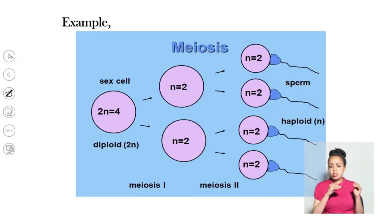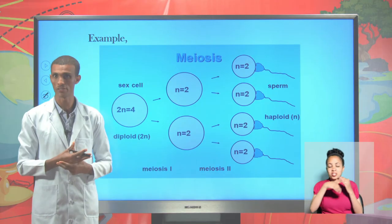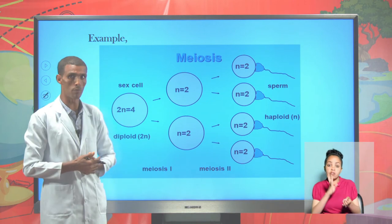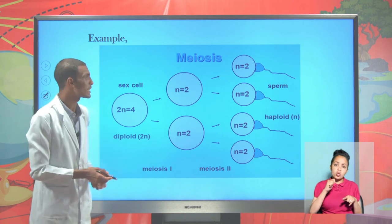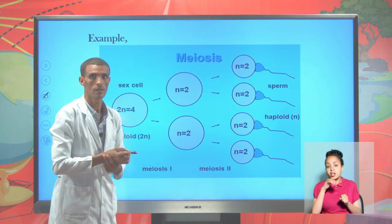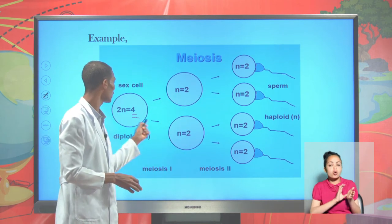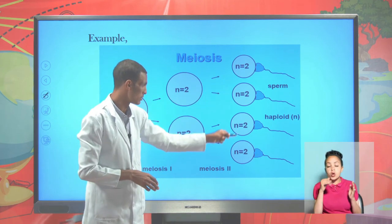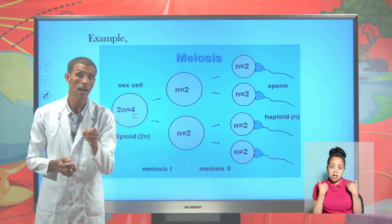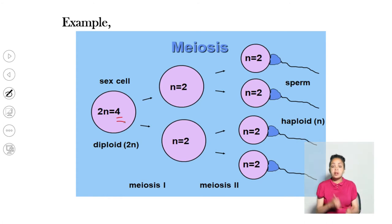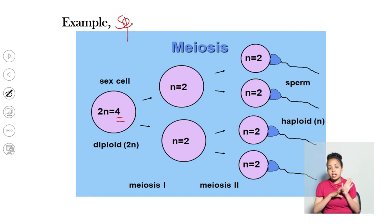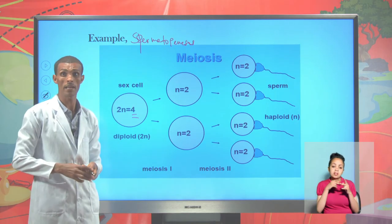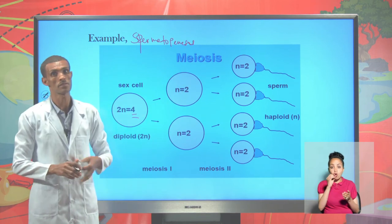When we speak about meiosis, it involves spermatogenesis and oogenesis. If a cell with four chromosomes is divided meiotically, the result is four daughter cells, where each daughter cell has half the number of parental chromosomes — two. At the end of meiosis, we end up with four daughter cells where the parental chromosome number is reduced by half. This is an example of spermatogenesis, which takes place in male gamete-producing cells. Oogenesis follows the same strategy and mechanism.